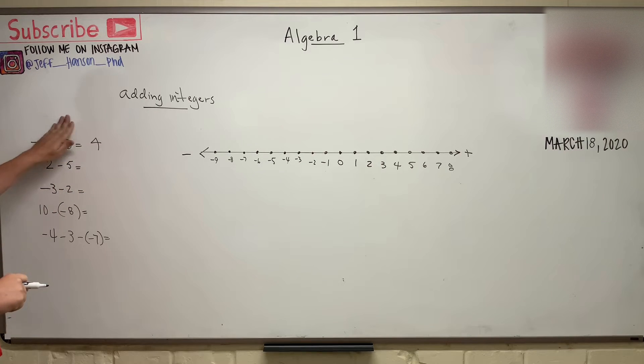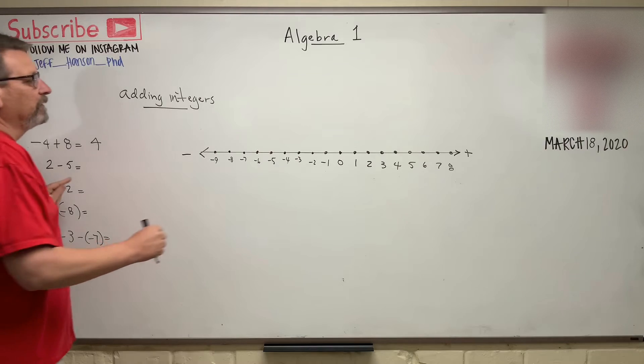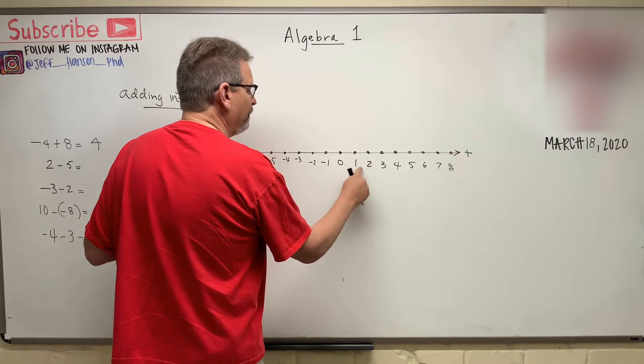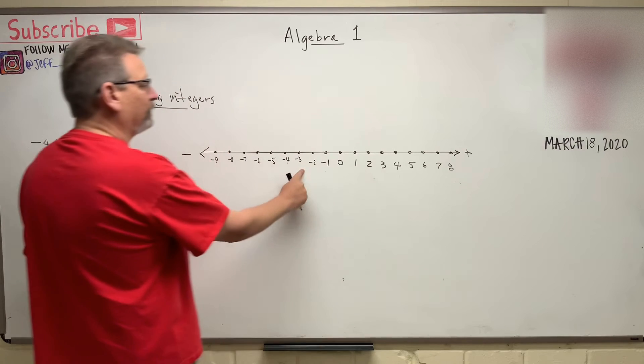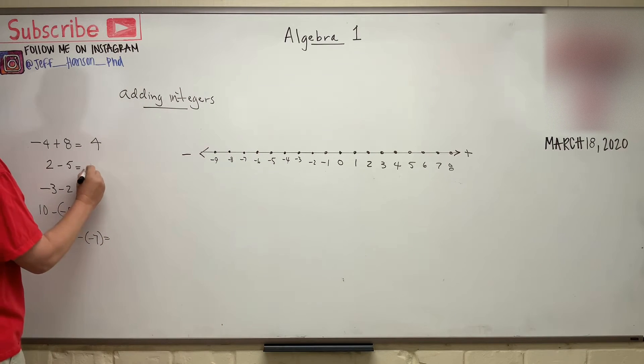Next, two minus five. Again, go on your number line over two: one, two, and then come back five: one, two, three, four, five. The answer is negative three.